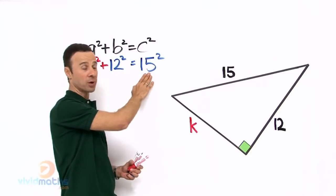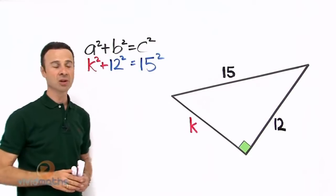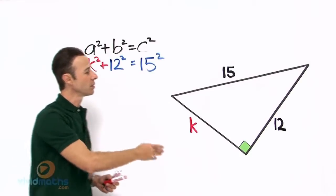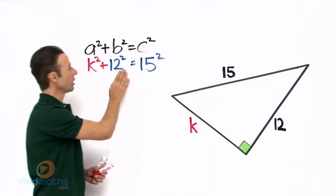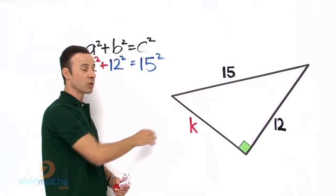So 15² is the hypotenuse right there - that's the long length, confirming it is the long length. Then we have 12² right there, there's that length. And finally K² is the missing pronumeral, sitting right there.